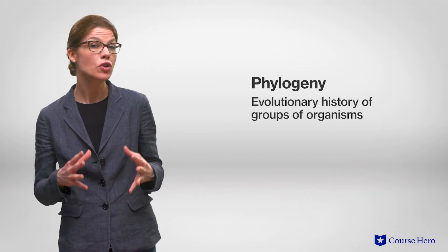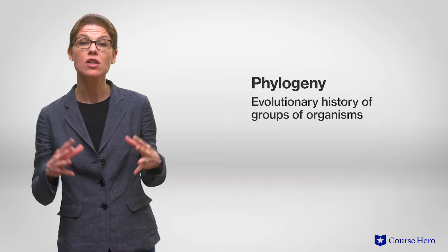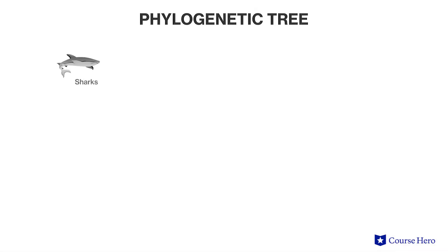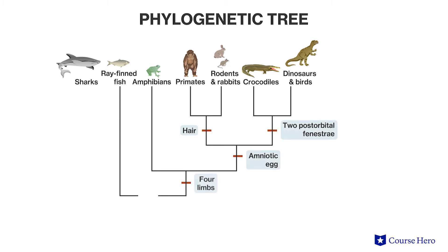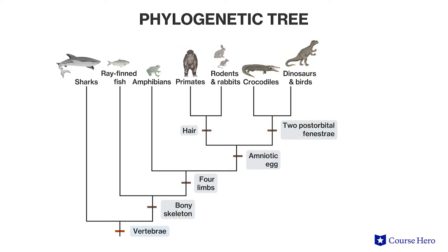One of the ways in which biologists try and understand the diversity of life is by tracing phylogeny — that is, the evolutionary history of a species or group of species. A phylogenetic tree can be used to represent the history of these evolutionary relationships. For example, sharks, ray-finned fish, amphibians, primates, rodents, and reptiles all appear on the same limb of a phylogenetic tree because they share the common trait of a spine — that is, they're all vertebrates.